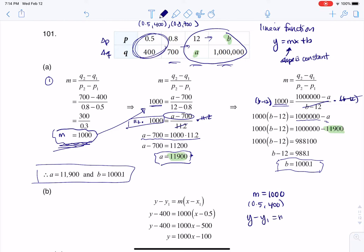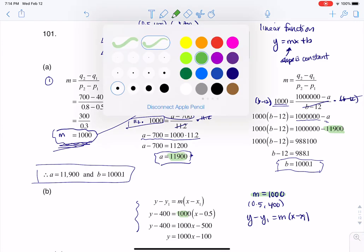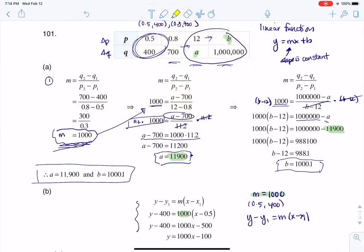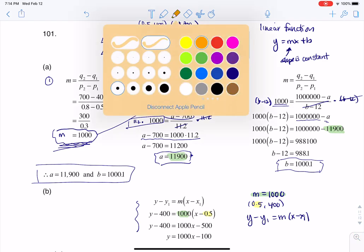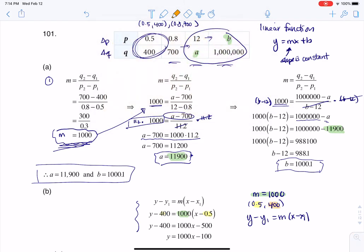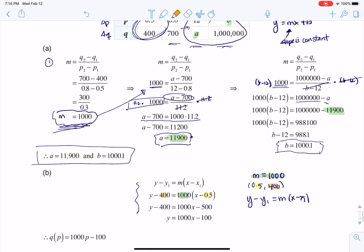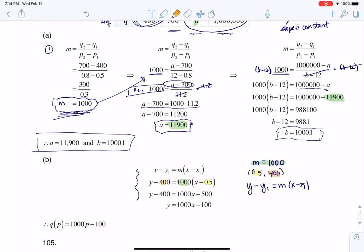I'm going to use (0.5, 400) and plug it into the point-slope formula, which is y minus y1 equals m times (x minus x1). That's what you see me going through here. M is 1,000, the x value is 0.5, and the y value is 400. Then I simplify it and get it into y equals mx plus b form.